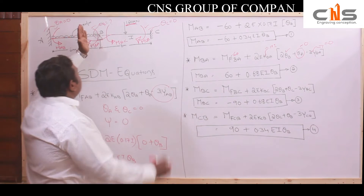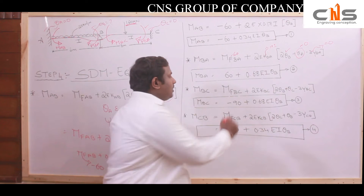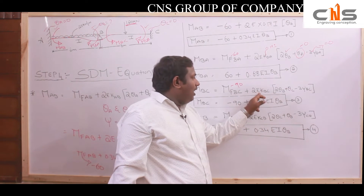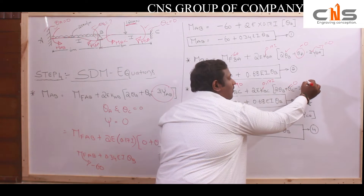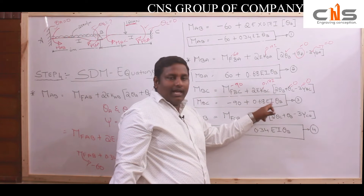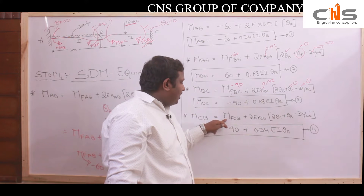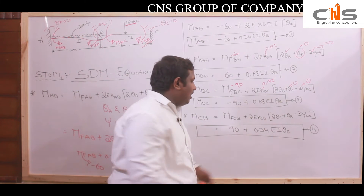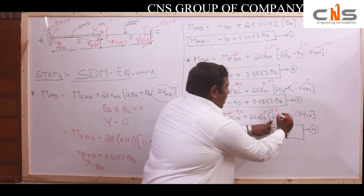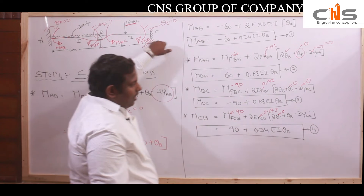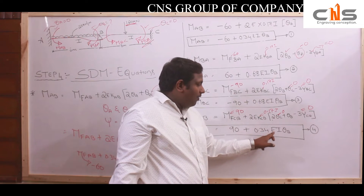For portion BC, applying the SDM equation: MBC equals MF BC plus 2E times KBC times theta B. Since MF BC is minus 90 and KBC is 0.17I, with theta C equals zero and settlement equals zero, this gives MBC equals minus 90 plus 0.68 EI theta B — equation 3. For MCB: MCB equals MF CB plus 2E times KCB times theta B. Since MF CB is 90 and theta C equals zero, MCB equals 90 plus 0.34 EI theta B — equation 4.